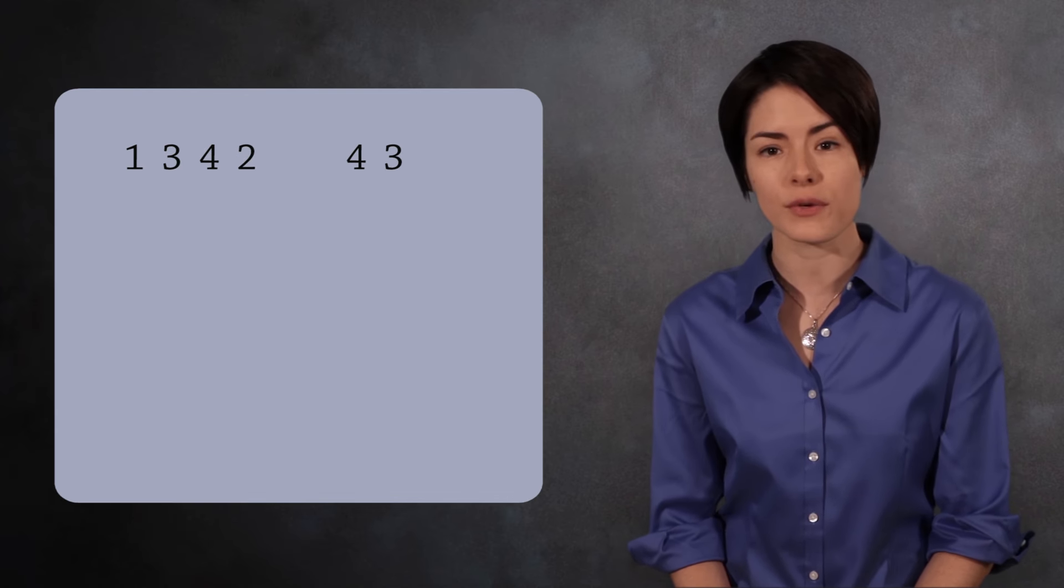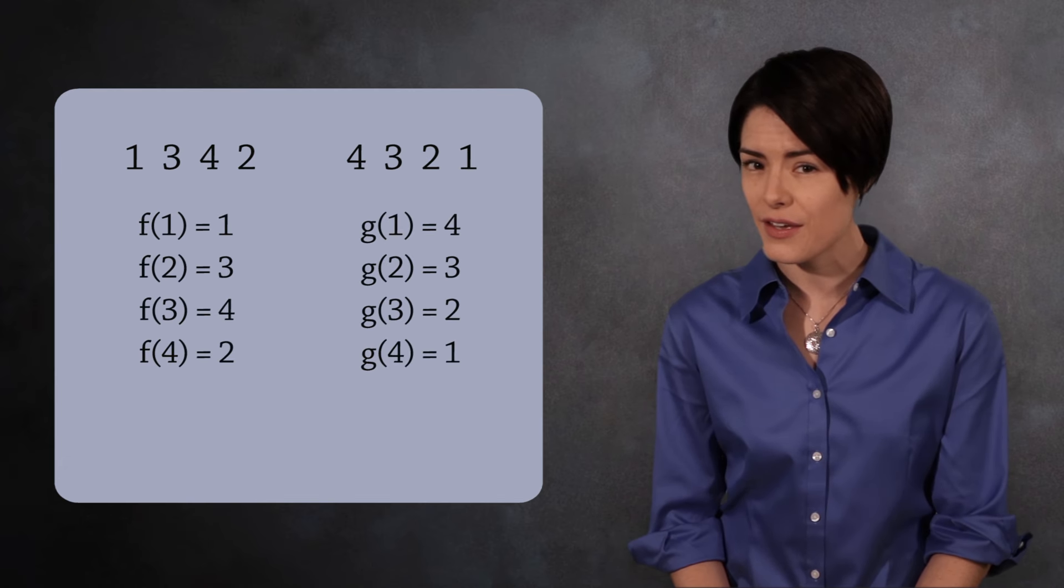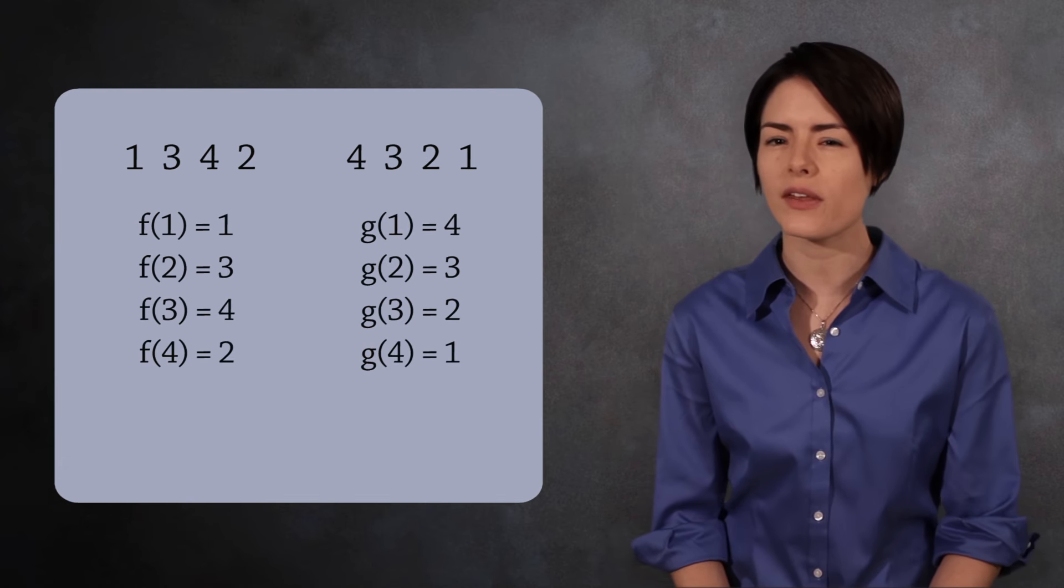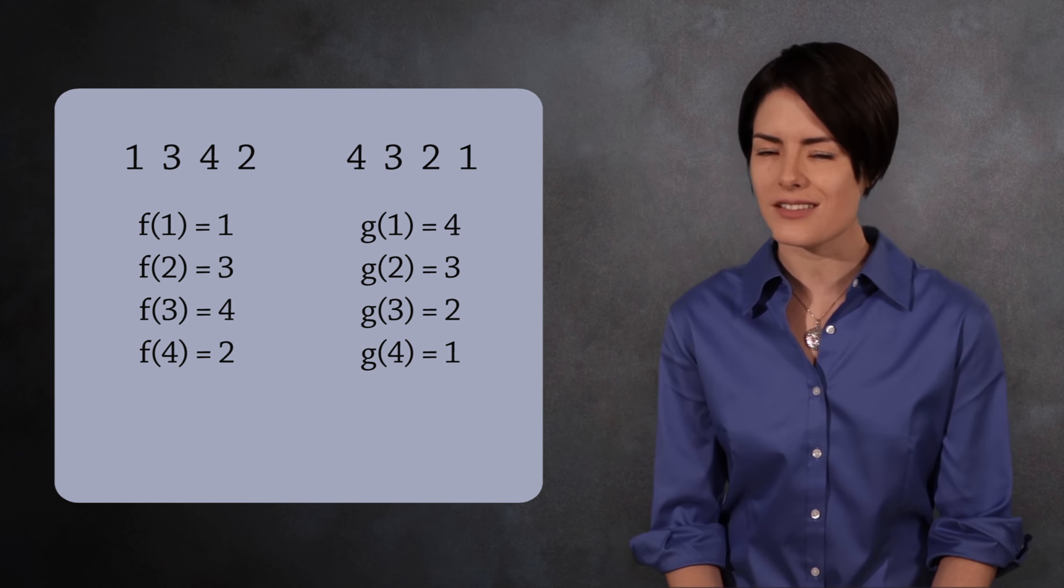Next, let's introduce a more compact way to represent permutations. As an example, we'll multiply the two permutations 1, 3, 4, 2 and 4, 3, 2, 1. Earlier, we wrote these as functions. But all we really need to know is what the numbers 1, 2, 3, 4 map to. The function notation just gets in the way.